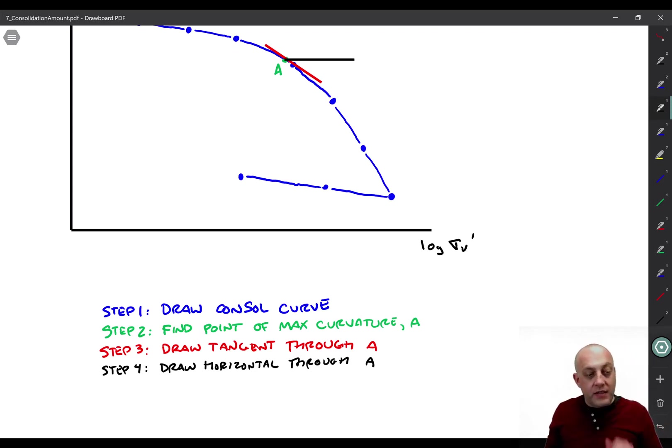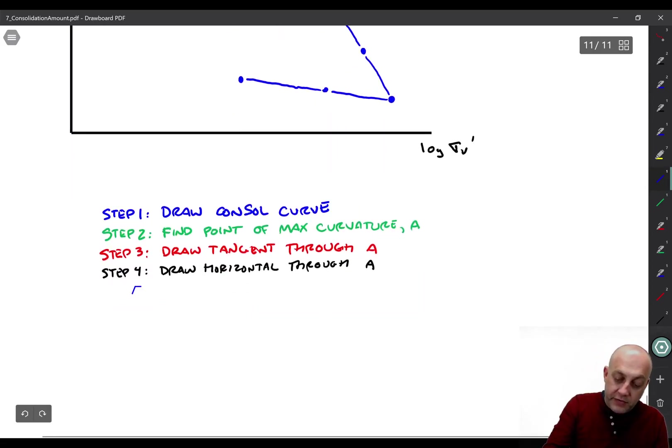Okay, and then step five, we need to draw a line that bisects the two lines that we've already drawn. So right in the middle, so right in the middle, I'll draw it right there. Step five, looks, using the wrong tool here. That was pulled up. Step five, draw a line that bisects three and four.